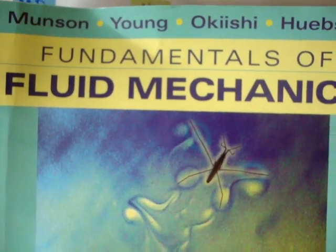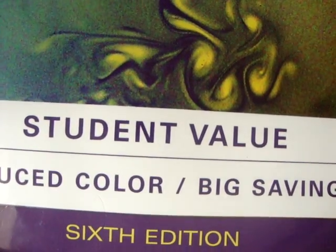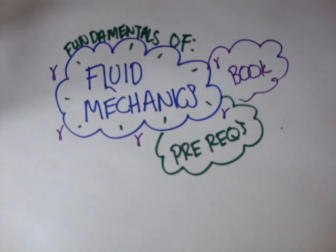The book is the sixth edition. Fundamentals of Fluid Mechanics by Munson and Young. Here's the cover. Student value edition. Again, you can have the color version. It doesn't matter. And it's the sixth edition. That's the book I'll be using.